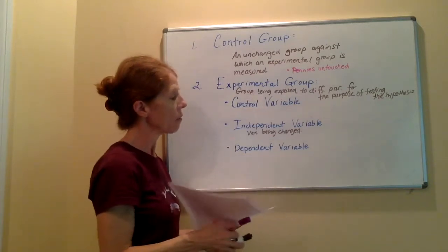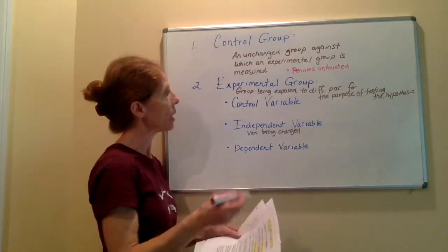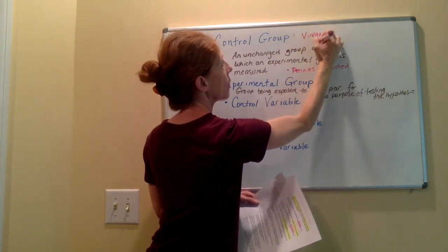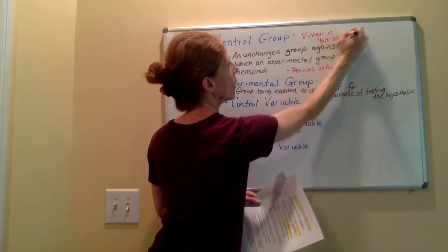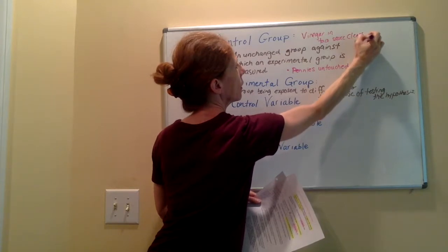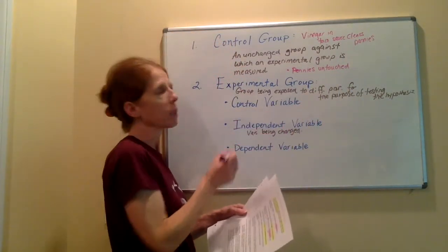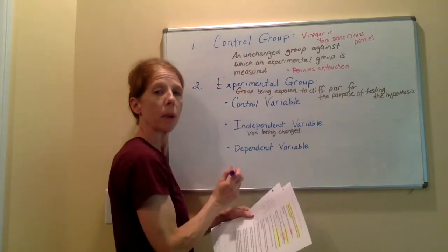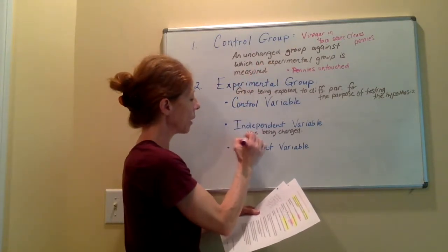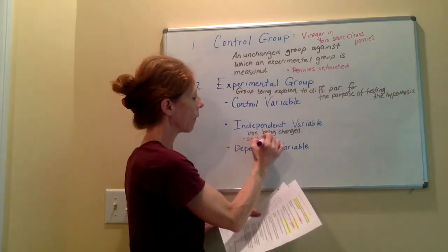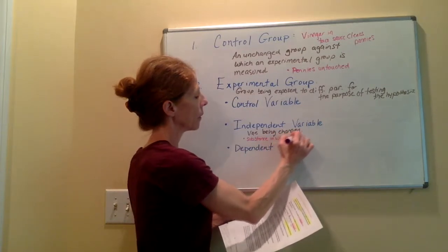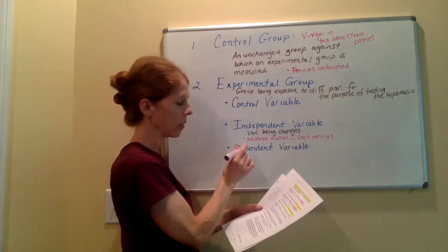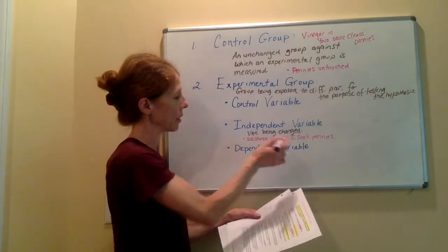For our independent variable, suppose my hypothesis is that the vinegar in the taco sauce cleans pennies. Then if I need to have different substances that I'm going to use to try and clean pennies, my independent variable would be the substance in which I soak the pennies. That's my independent variable — the type of cleaning solution I'm going to use, the substances I'm going to try and clean them in.